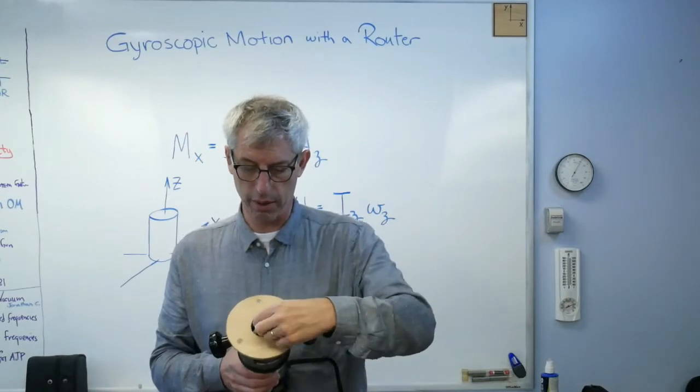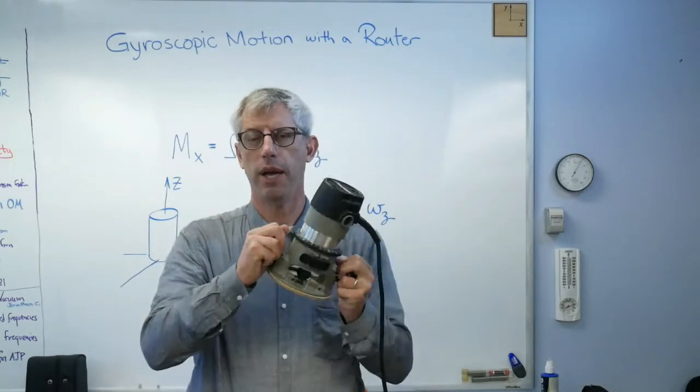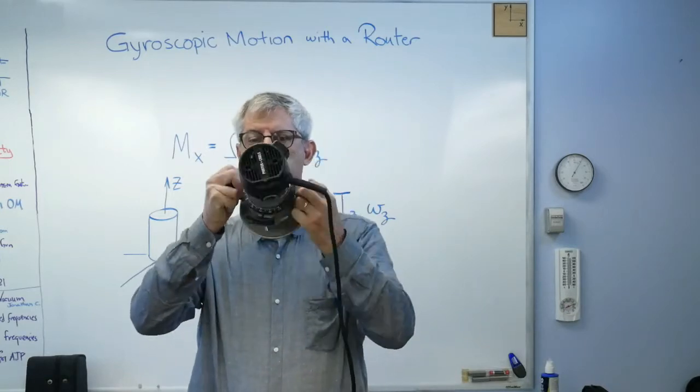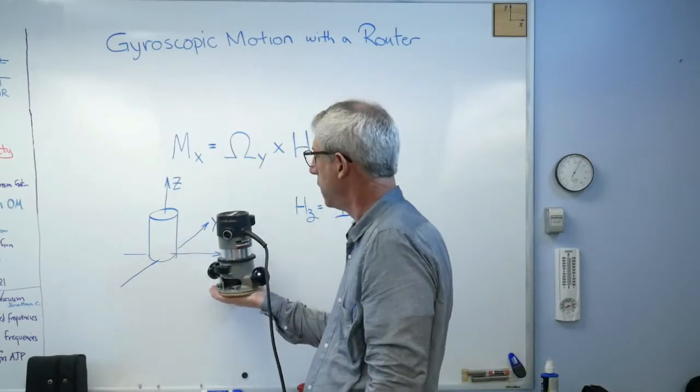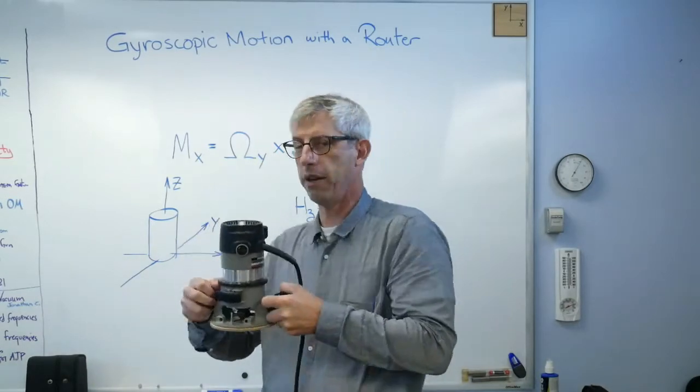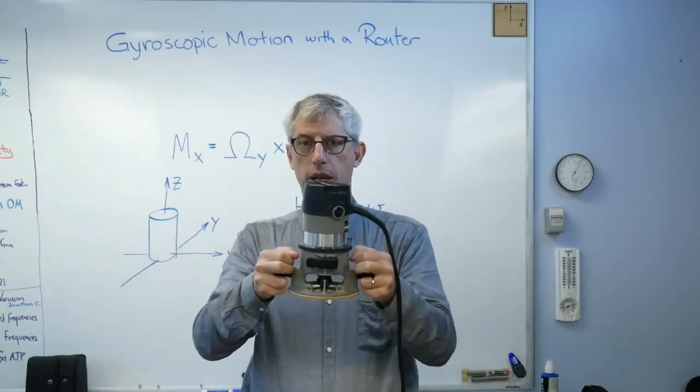And it's got, this one actually has a little bit in here. Probably shouldn't put that in there, but there it is. It spins about this axis. See right here? That's the z-axis going up. Matches that picture right there. And I've got handles on it. Normally, you use these handles to guide it as you make a cut.